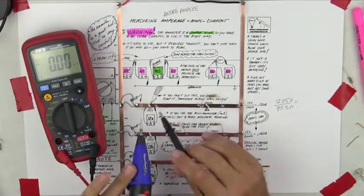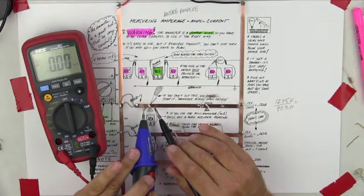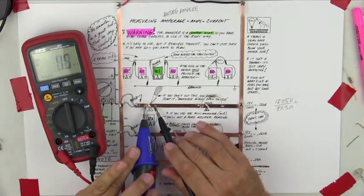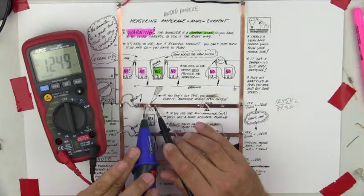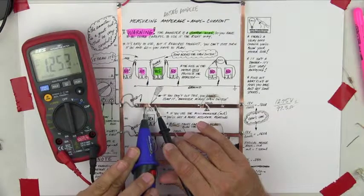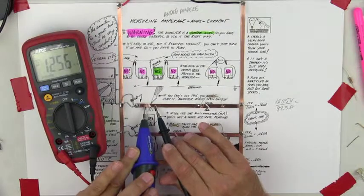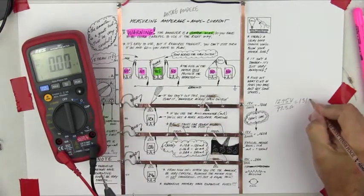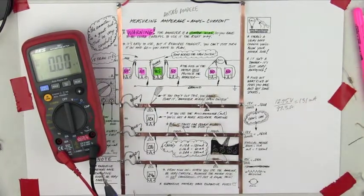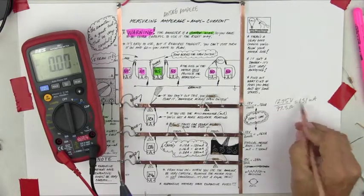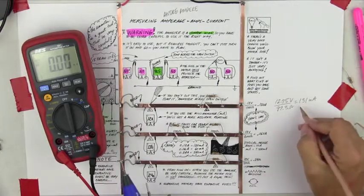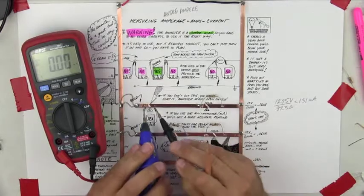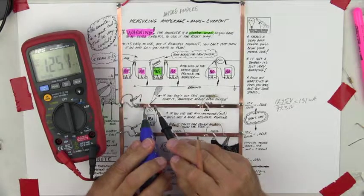So 12.75 divided by 97.3 equals 0.131. So that would be 131 milliamps. And let's see how close we are. 124.8, 125. So I calculated 131. I should have written that down, huh? 131 milliamps.